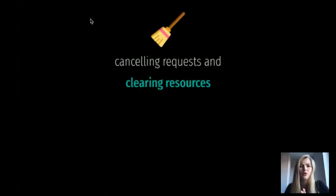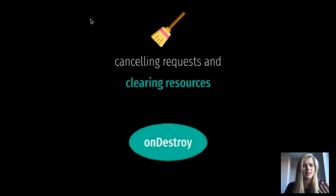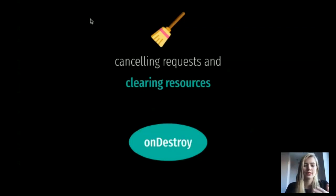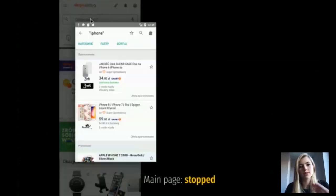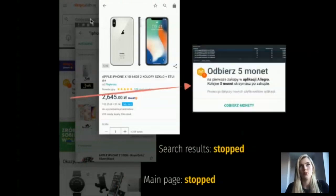So if Glide takes care of clearing resources, why do we have so many bitmaps stored in memory? The first problem I found was caused by the fact that yes, Glide clears resources — but it does so on destroy. When I opened the search results activity, the main activity goes into the background but it's only stopped, not destroyed. So all images on that activity cannot be freed because Glide clears resources on destroy. After I open the product page, the search results activity is also not destroyed, so all those bitmaps cannot be released either. No wonder I saw an image from the main page still in memory while being on the product screen.